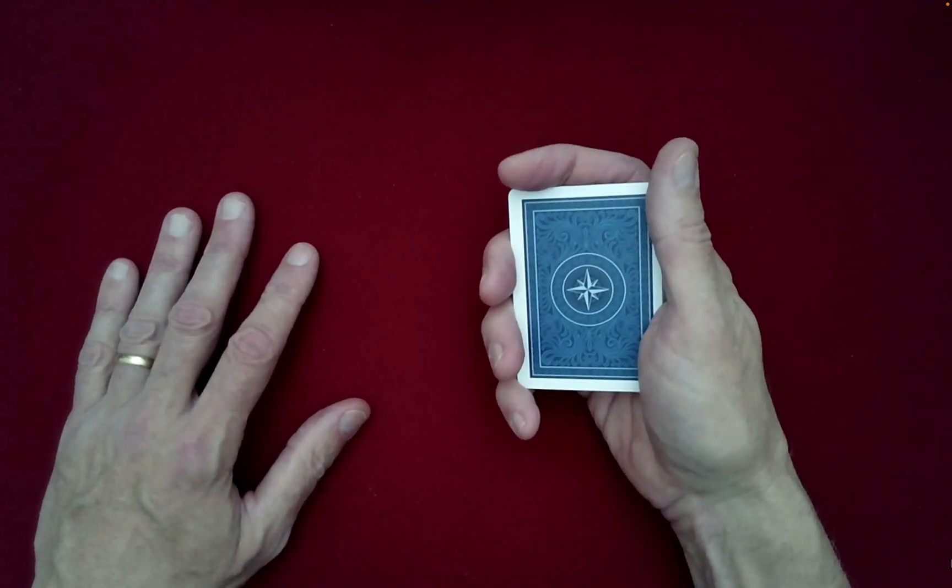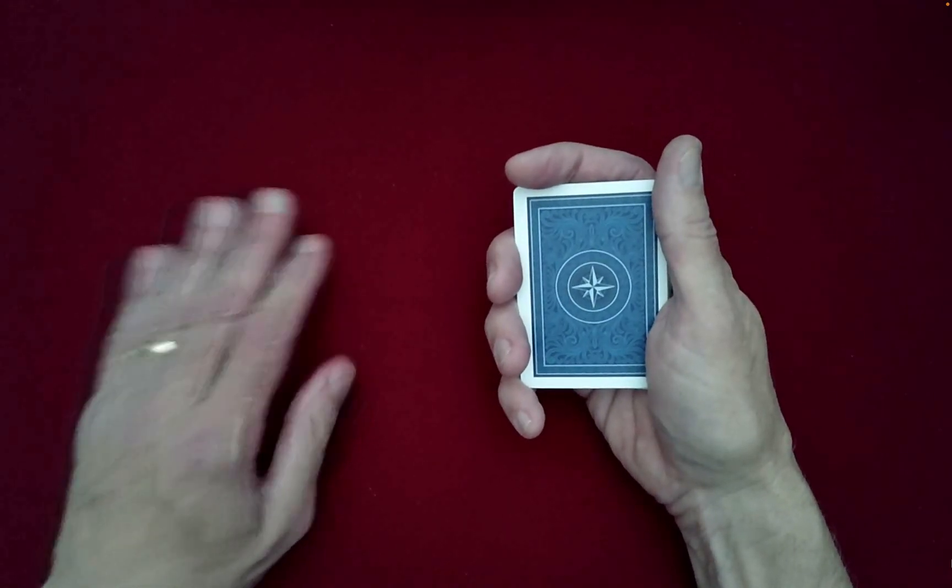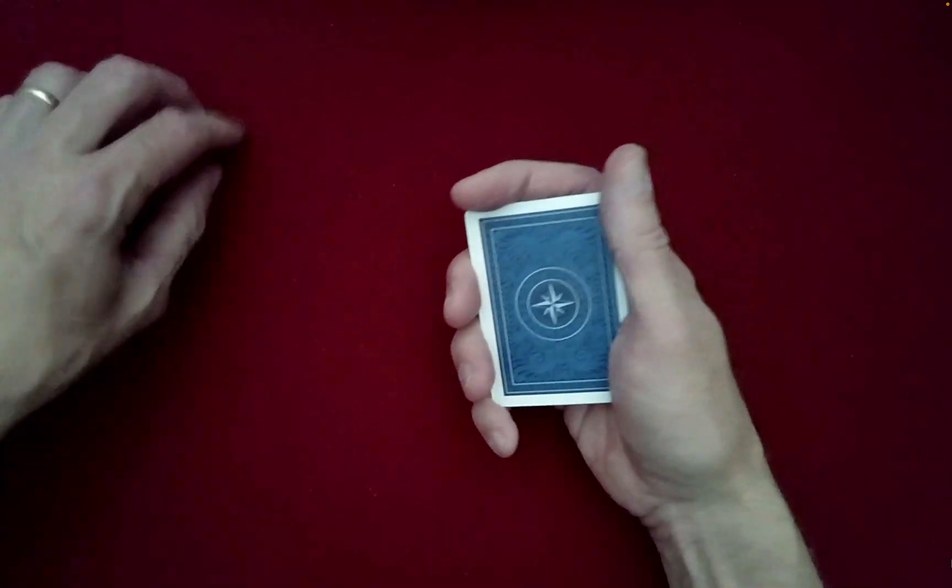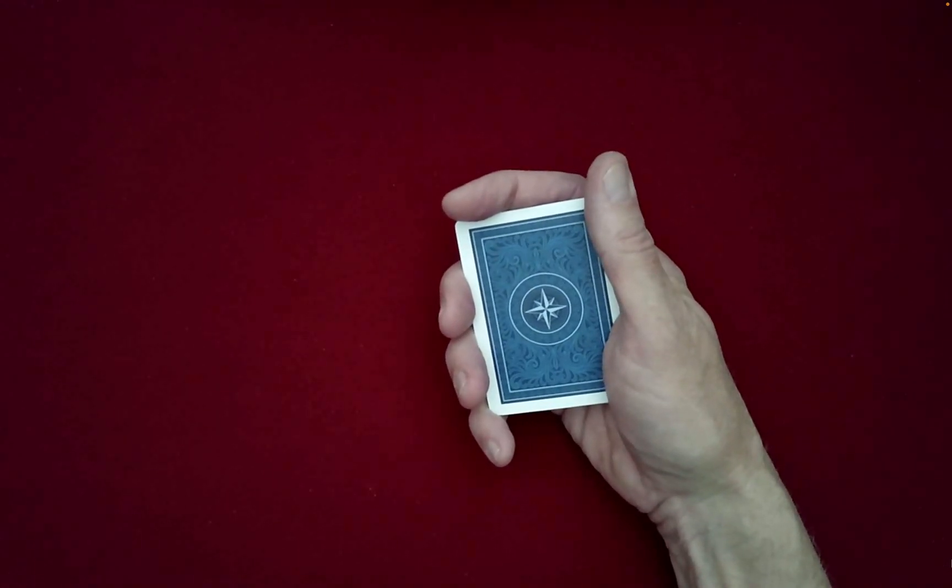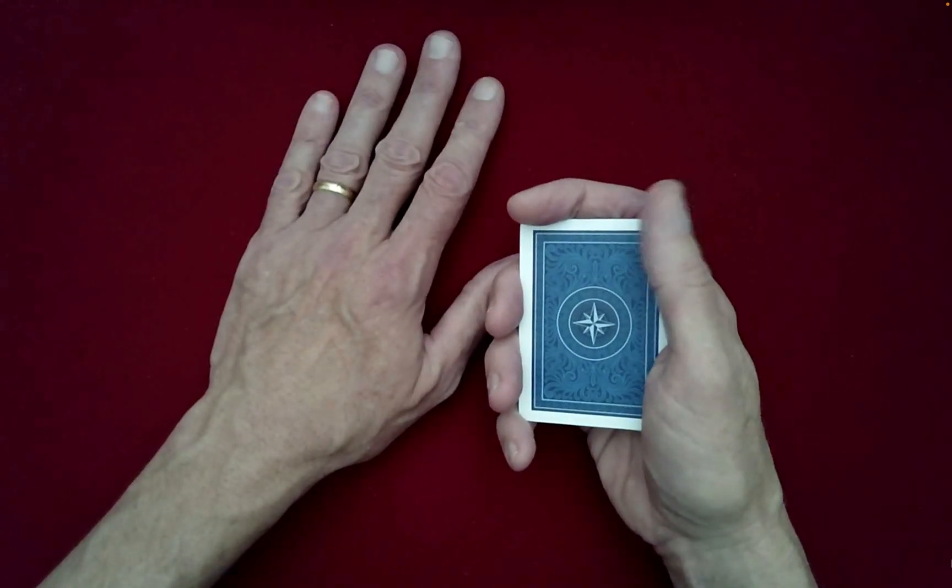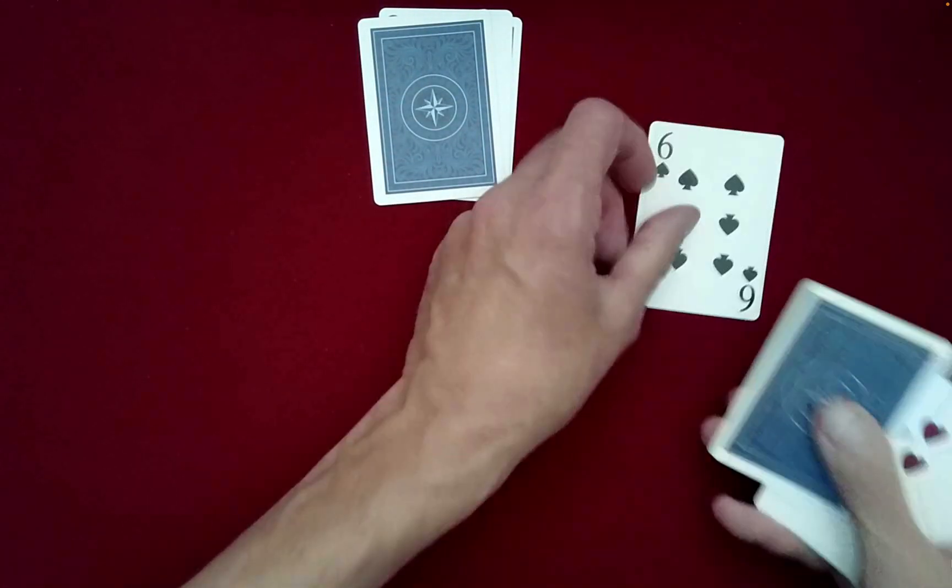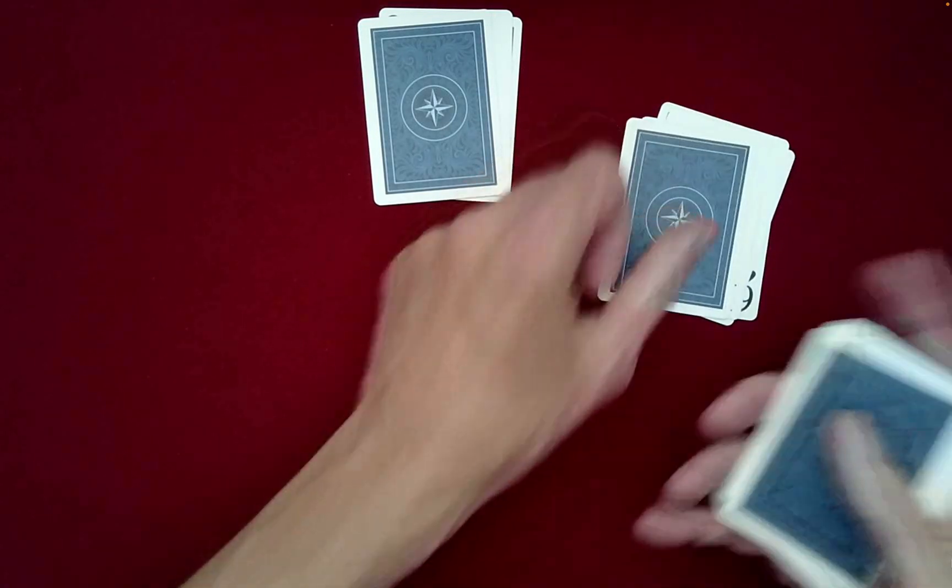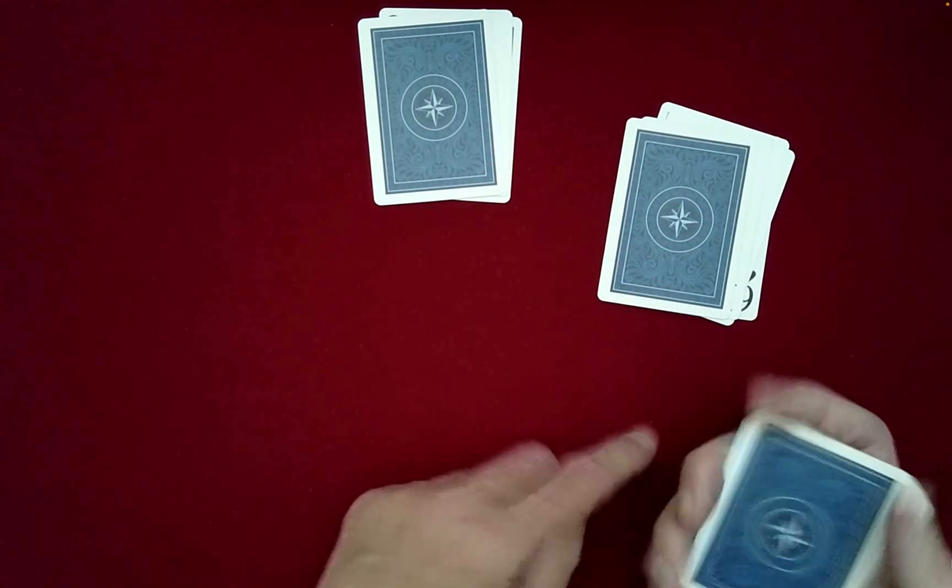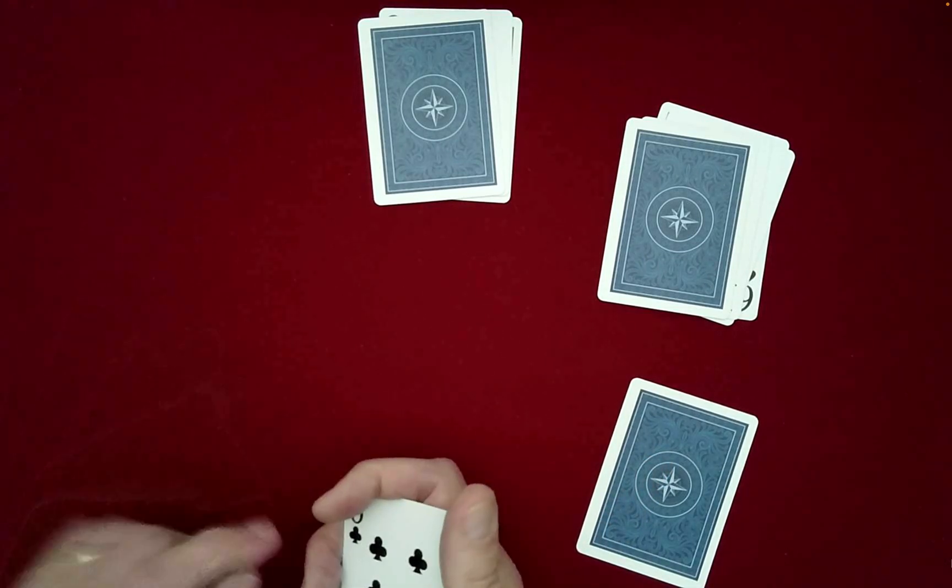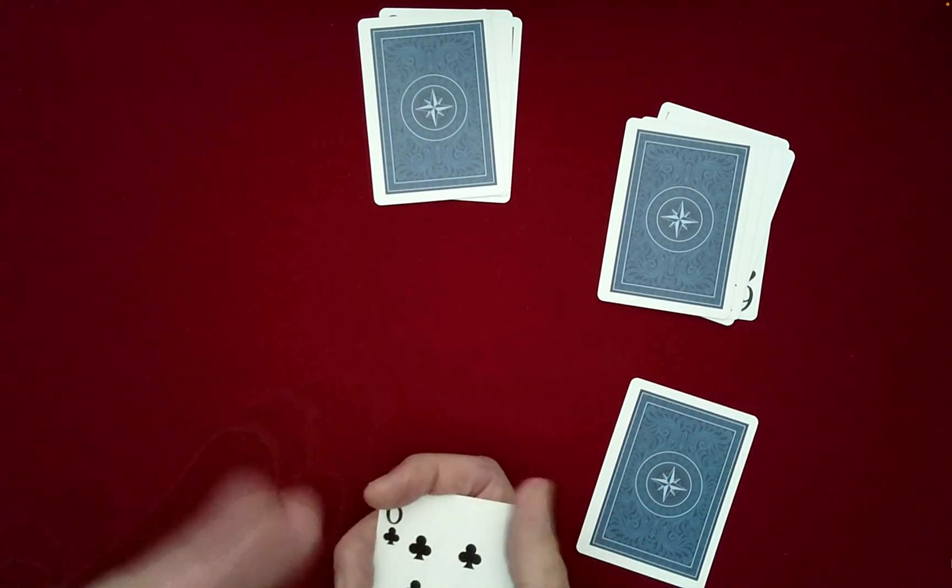Now I promised you that we would use some odd numbers here. So I'm going to deal out the cards into odd-sized piles in kind of a circle, but you're going to tell me what those odd numbers are. So what do you want first? Three. So one, two, three. What about over here? Five. One, two, three, four, five. What about here? Just one. Okay, one is an odd number.